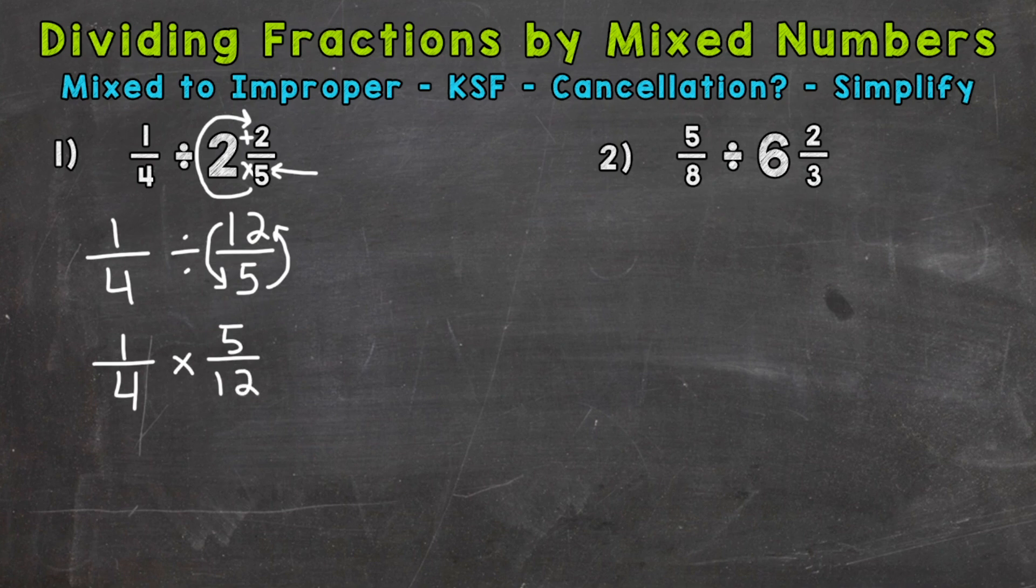Now we're ready to multiply straight across and get our answer. But before doing so, we can always check to see if there is any opportunity for cancellation, which you can think of as simplifying the problem before multiplying straight across. We need to look for common factors between the numerators and denominators. The only common factors within this problem are one, so we cannot use cancellation. One times five is five, and four times twelve is forty-eight.